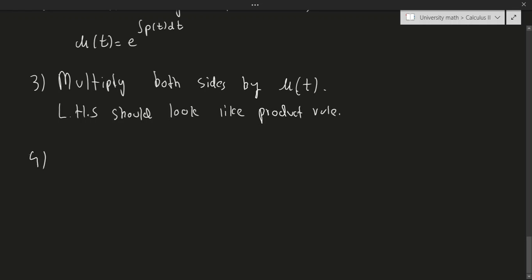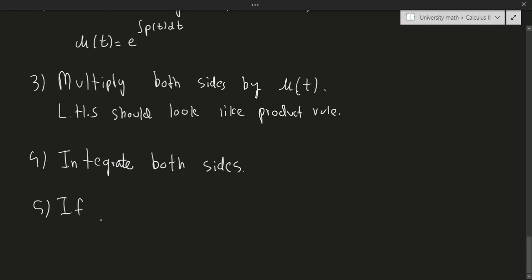Step four: integrate both sides. The left-hand side will cancel because you can rewrite it as a derivative. Step five: if possible, solve for y. And that's it — that's the entire procedure for solving a linear differential equation. In the next video I'll be doing a bunch of examples covering this technique, and hopefully after that you'll have figured out how to solve these kinds of problems.